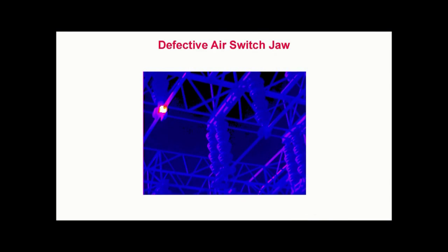Defective air switch jaw. This is a thermogram recorded in a large outdoor electrical substation. We are standing on the ground observing two phases of a three phase overhead disconnect switch approximately 30 feet above us. In this thermogram, we see a hot area indicated as white in the contact area of the left pole of the switch.